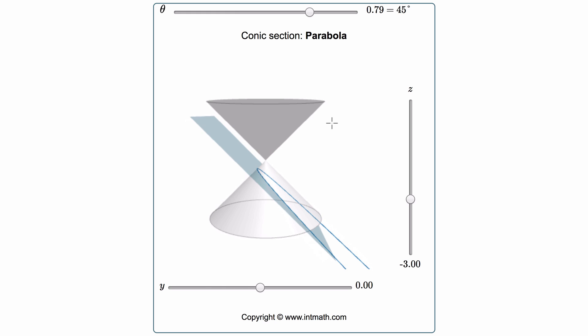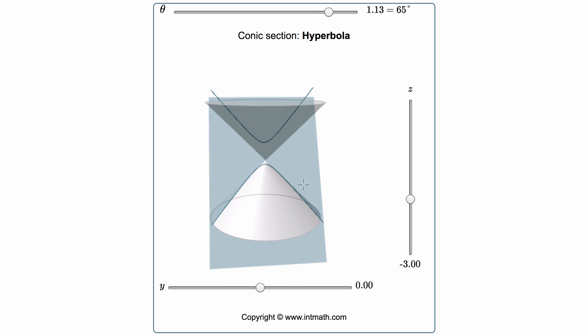If we continue to change the angle to make it a little steeper, now it's going to intersect both of our nappes. It kind of looks like we have a parabola on top and bottom, but we call this figure a hyperbola. It's a parabola-like shape formed by the plane intersecting both of our nappes.